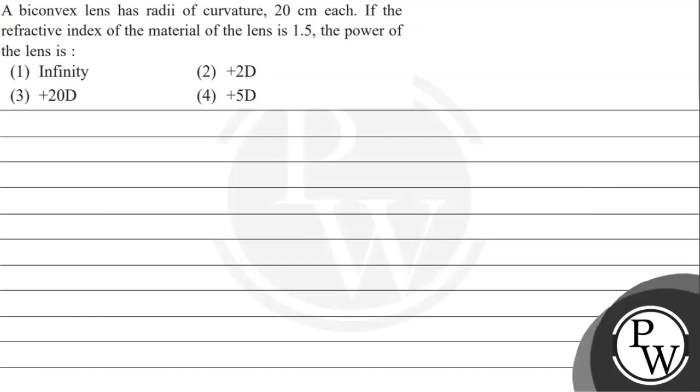Hello, let's read the given question. The question says a biconvex lens has radii of curvature 20 cm each. If the refractive index of the material of the lens is 1.5, the power of the lens is: option 1 infinity, option 2 plus 2D, option 3 plus 20D, option 4 plus 5D.